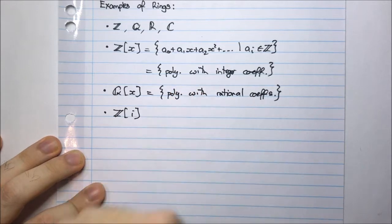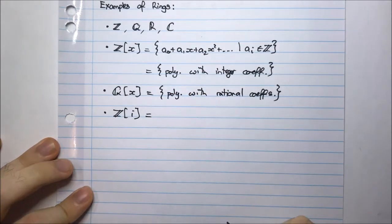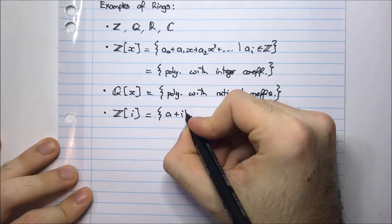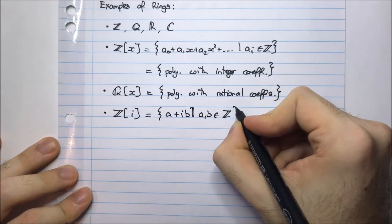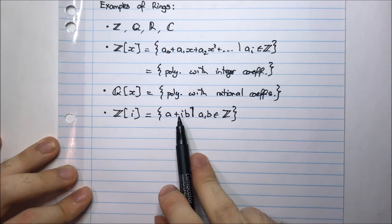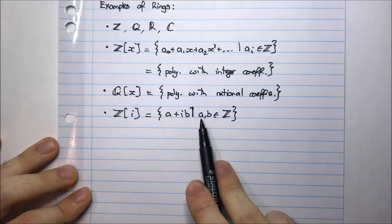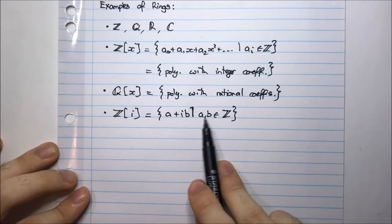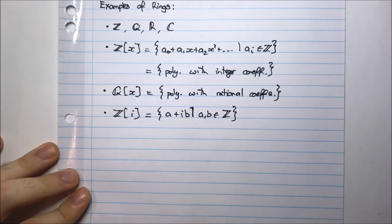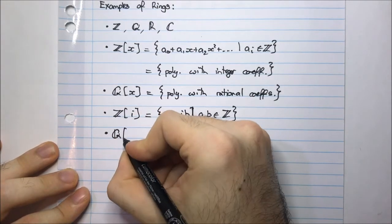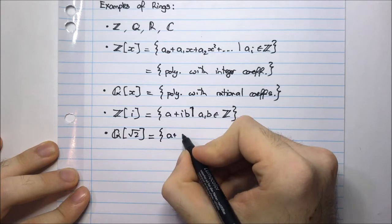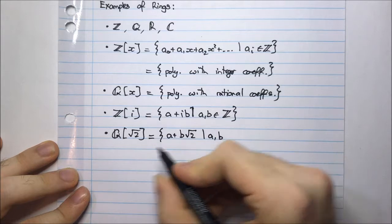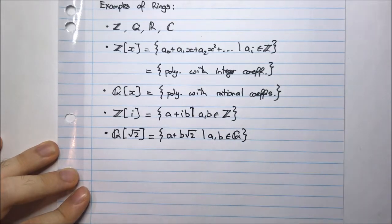What about Z adjoined with i, where i is the square root of minus one? That's also a ring. These are all numbers of the form a plus ib where a and b are integers — the Gaussian integers. Don't confuse this with all complex numbers; here a and b can only be integers, not all reals. We also have Q adjoined with root 2: all numbers of the form a plus b times the square root of 2 where a and b are rational. That's also a ring.